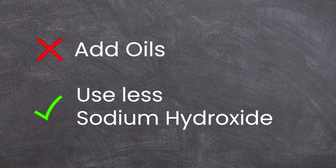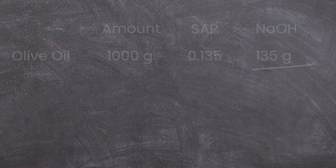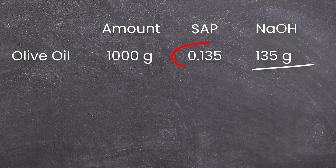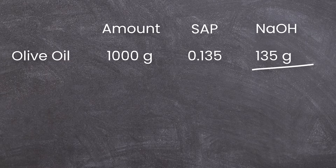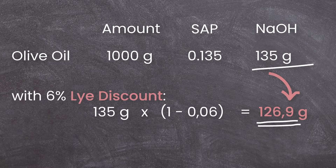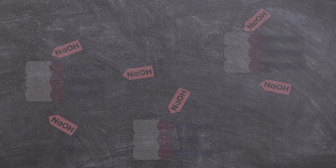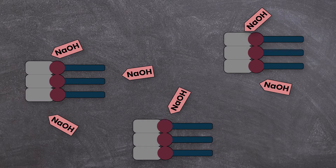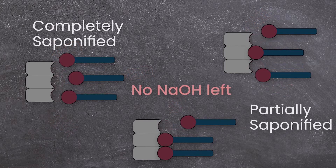So now we know that we don't add oils but use less sodium hydroxide. What exactly does that mean? With the saponification value, you can calculate how much sodium hydroxide you need for a complete saponification, which means there is no leftover oil or sodium hydroxide at the end. When you use less sodium hydroxide, you will have some leftover oil molecules which weren't able to saponify completely because they ran out of sodium hydroxide to react with.